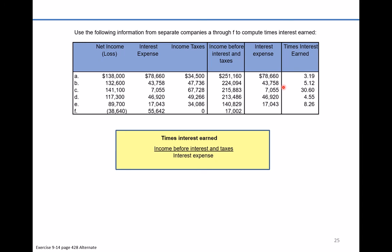And company F: we take the interest expense and add it back to the net loss, because that interest expense, once deducted, actually helped to cause the net loss. They didn't pay any taxes because you don't pay taxes when you lose money. Therefore, their income before interest and taxes was $17,002, with an interest expense of $55,642. These guys will not have coverage — they have a coverage of less than one. They don't have enough income before interest and taxes to cover their interest expense fully.